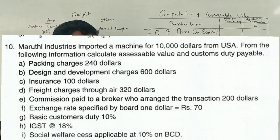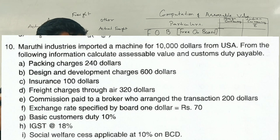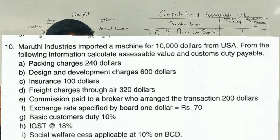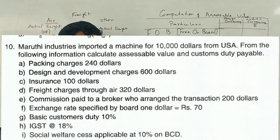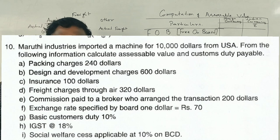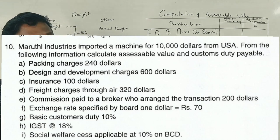Exchange rate specified by the Board: $1 equals ₹70. Basic Customs Duty (BCD): 10%. IGST: 18%. Social Welfare Cess applicable: 10% on BCD.